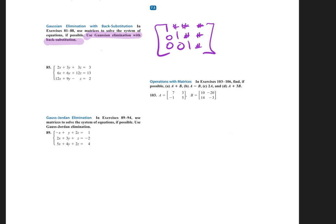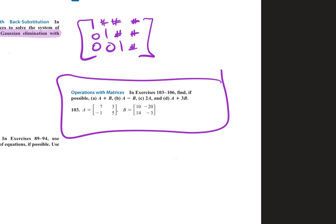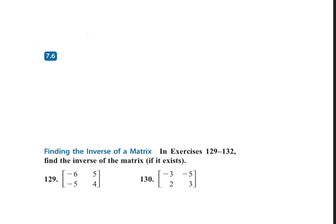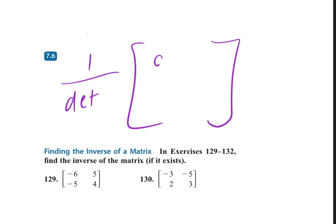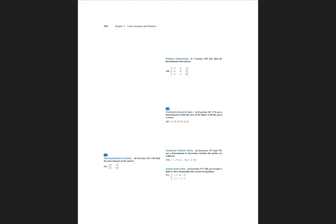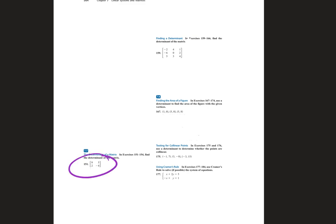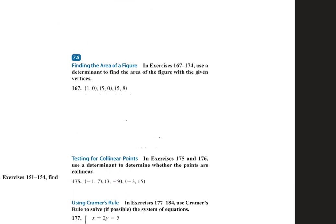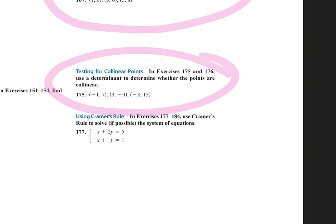Under operations with matrices came addition, subtraction, multiplication, determinants, and inverses — all from Chapter 7. Remember, the inverse is 1 over the determinant, then you switch the A and D, negate the B and C, and multiply it in. The determinant is our little 'Jesus fish.' For the determinant of a 3 by 3, you add the other columns — copy the first two columns over — go down the diagonals one way and subtract going back the other way. This is part of the Cramer's rule process, but you can also get a standalone 3 by 3 determinant question. You also use the determinant to find area and to test for collinear points.